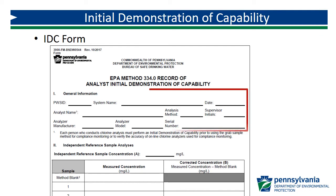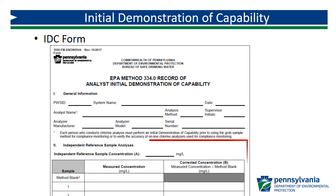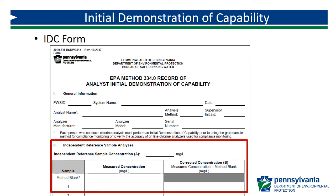Here is what the IDC record-keeping form looks like. You should begin by completing Part 1, General Information, at the top. Record your PWS ID, system name, the date, the analyst name, analysis method, and the analyzer manufacturer, model, and serial number. Part 2, Independent Reference Sample Analysis, is where you will record the results of the method blank and your five replicates of primary standard.